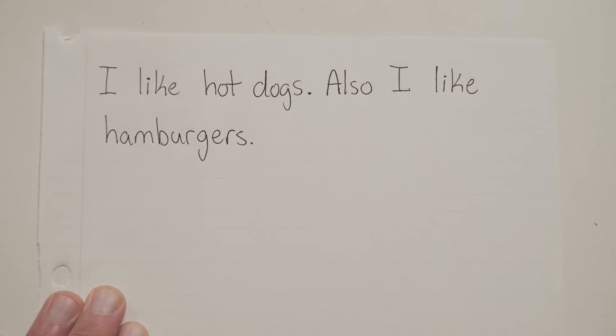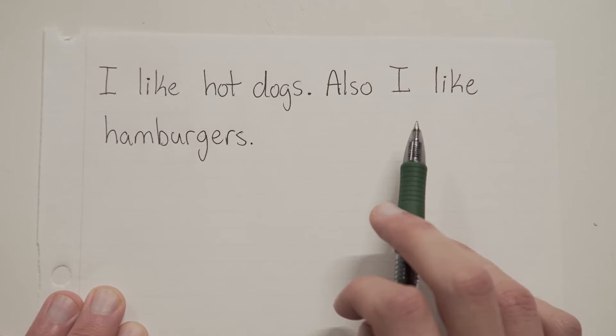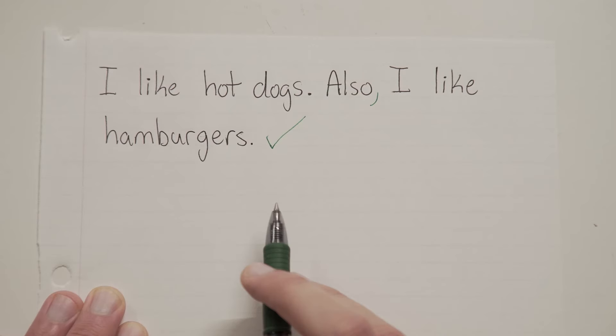Couple more. I like hot dogs. Also, I like hamburgers. Okay, so what do you think here? You've got sentence number one, and then you've got the word also, which sort of leads into or transitions into sentence number two. So of course, all we gotta do is put a comma in there. That's it.